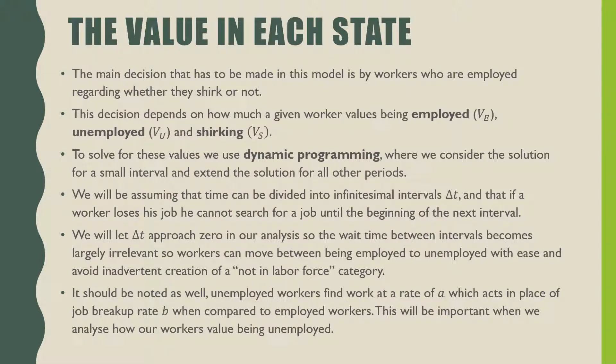The main decision that has to be made in this model is by the workers who are employed regarding whether or not they shirk. This decision depends on how much a worker values being employed, unemployed, or shirking. To solve for these values, we use dynamic programming, where we consider the solution for a small interval and then extend the solution for all other periods. We assume that time can be divided into infinitesimal intervals of delta T, and that if a worker loses his job, he cannot search for another job until the beginning of the next interval. We'll let delta T approach zero, so workers can move between being employed and unemployed with ease. It should also be noted that unemployed workers find work at a rate of A, which acts in place of the job breakup rate B when compared to employed workers. This will be important when we analyze how workers value being unemployed.